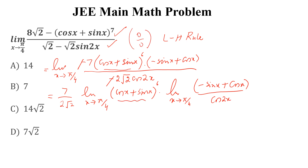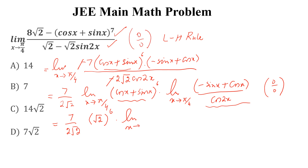Now putting pi by 4, this equals 7 divided by 2*sqrt(2), and (cos(π/4) plus sin(π/4))^6 equals (sqrt(2))^6. But if we apply pi by 4 to the remaining limit, it gives 0/0 form again, so we apply L'Hôpital's rule once more. The derivative of the numerator gives minus cos x minus sin x.